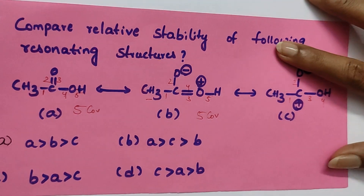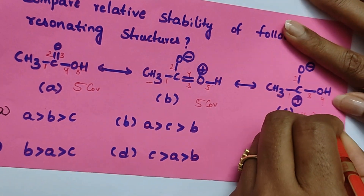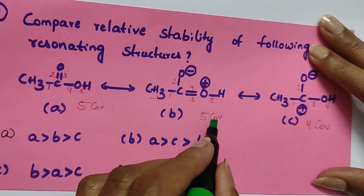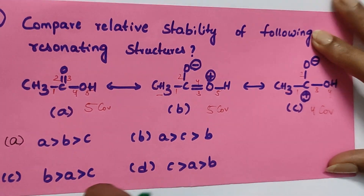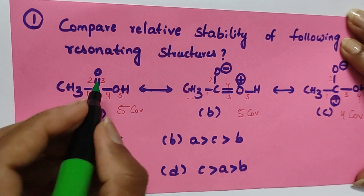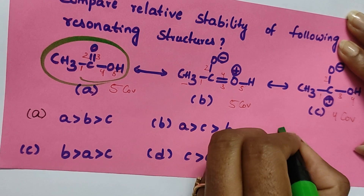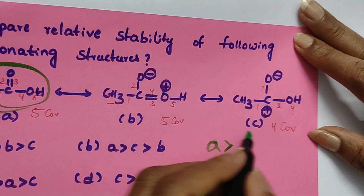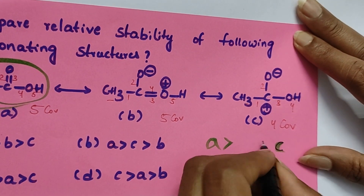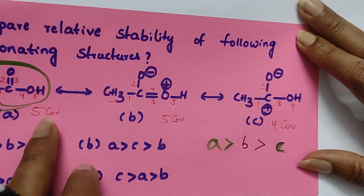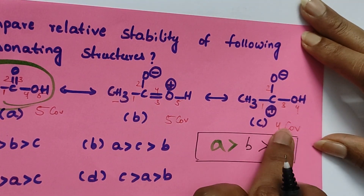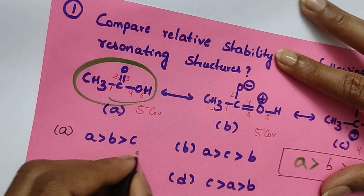Since both A and B have the same number of covalent bonds, apply trick number two — check for charge. The neutral molecule is more stable, so A is more stable than B. C is the least stable because it has fewer covalent bonds. Order: A is most stable, then B with more covalent bonds but charges present, then C with least covalent bonds. Option number one is the correct answer.